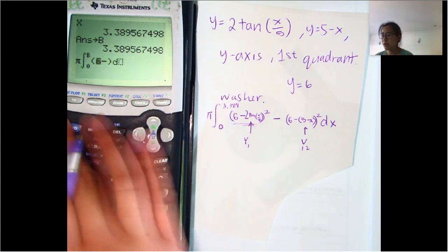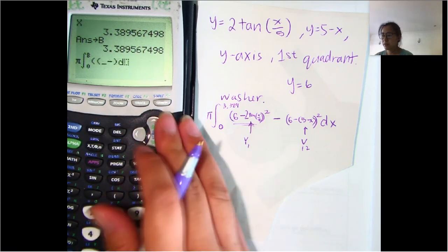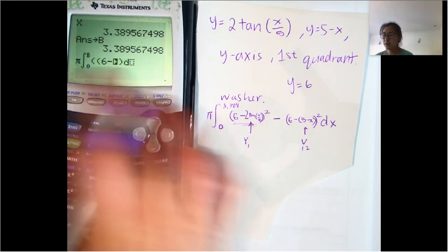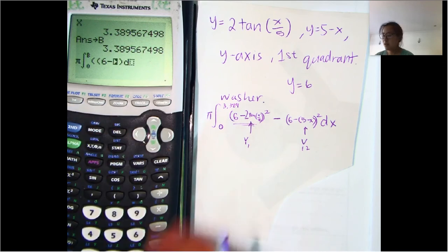so we go to, let's actually put that in parentheses, by the way, because we want to square it eventually. So parentheses, 6 minus, and then y1.